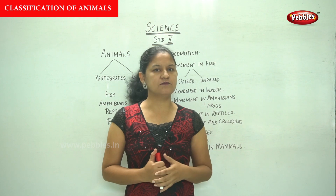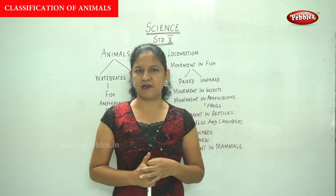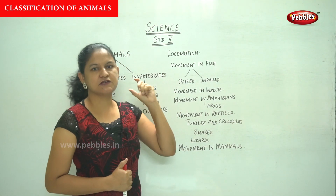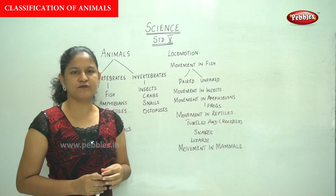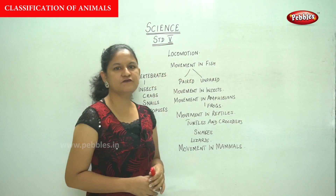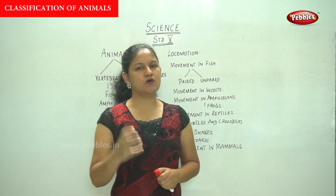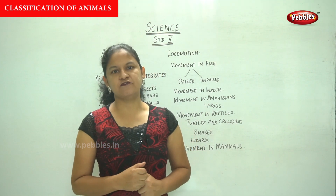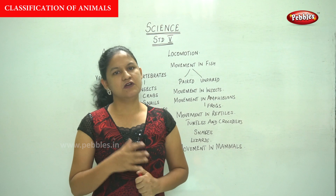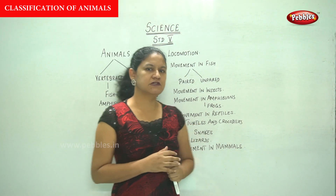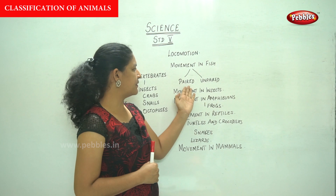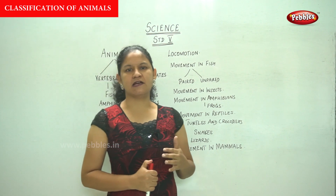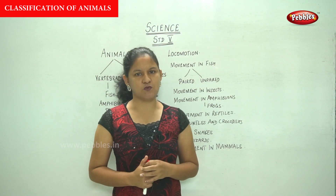Locomotion is achieved by limbs or other body parts. Moving on to movement in fish: the locomotion in fish is called swimming, and they have fins that help them swim in water. These are known as paired and unpaired fins.